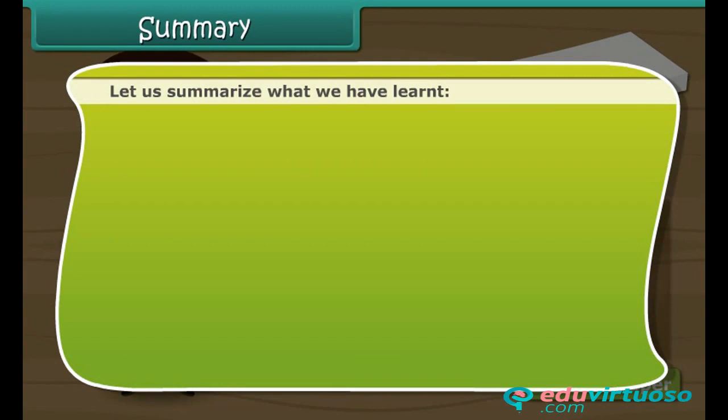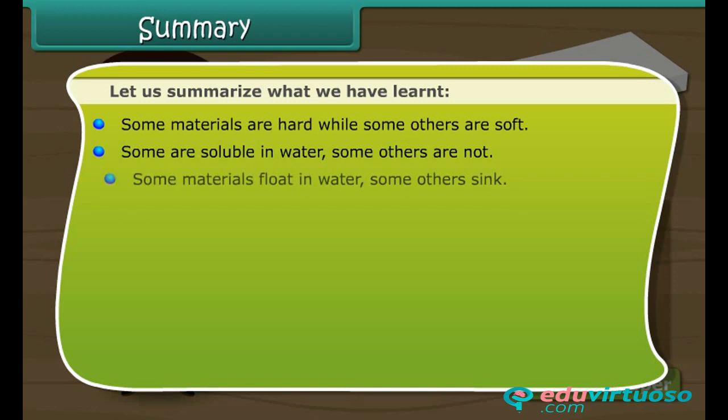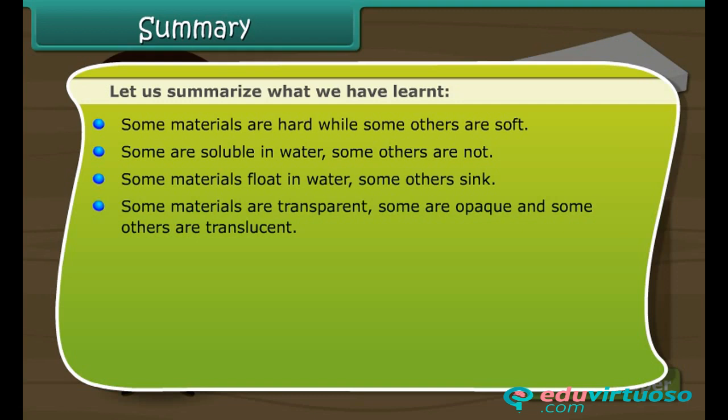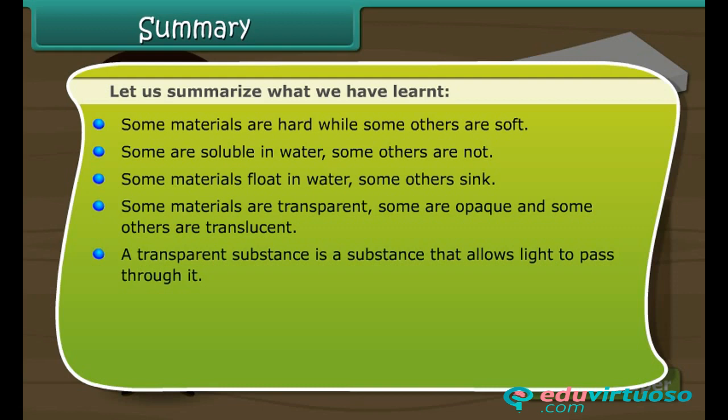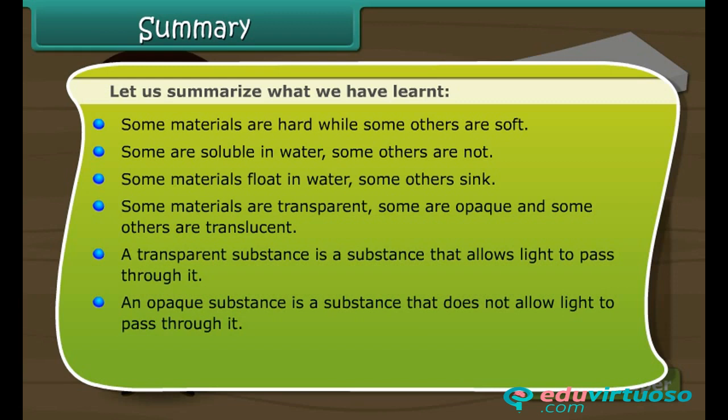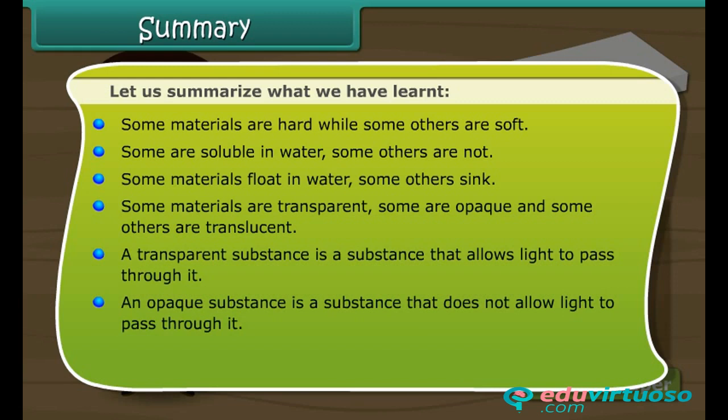Let us summarize what we have learned. Some materials are hard, while some others are soft. Some are soluble in water, some others are not. Some materials float in water, some others sink. Some materials are transparent, some are opaque, and some others are translucent. A transparent substance allows light to pass through it. An opaque substance does not allow light to pass through it. A translucent substance is partially transparent and allows light to pass through it in a diffused manner.